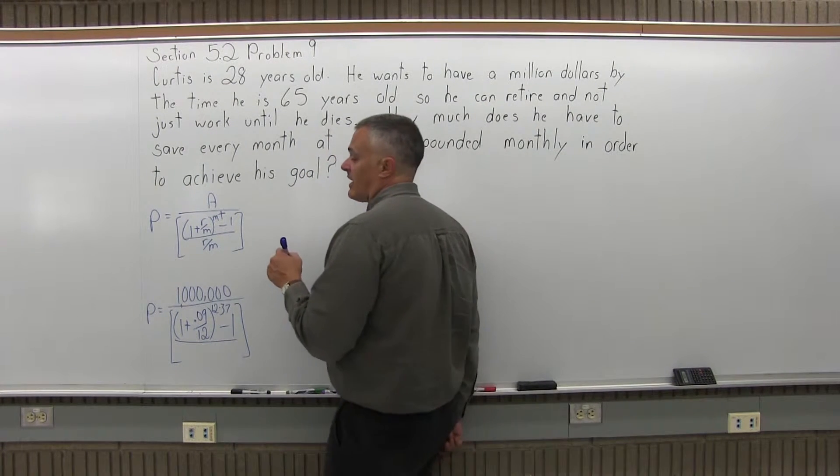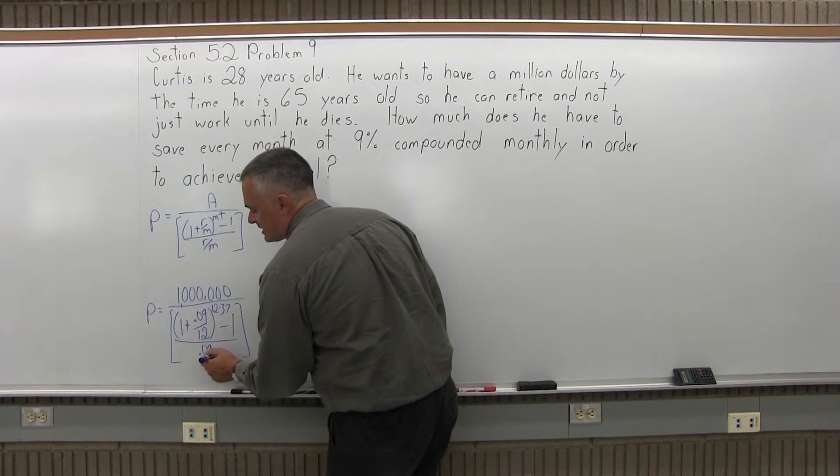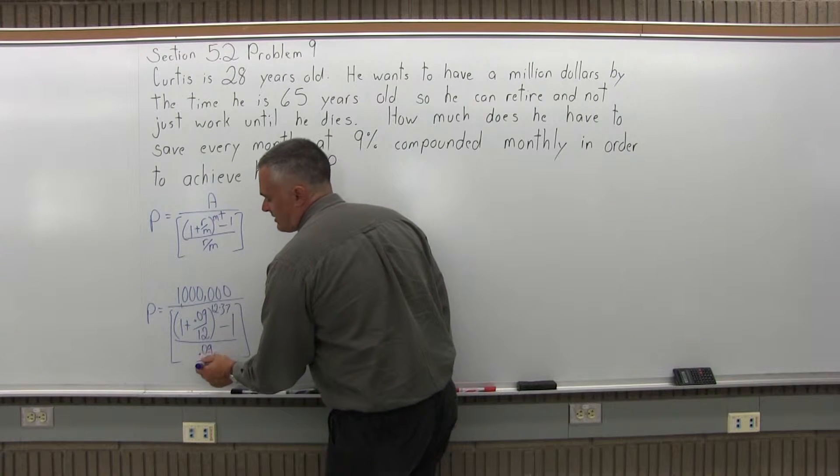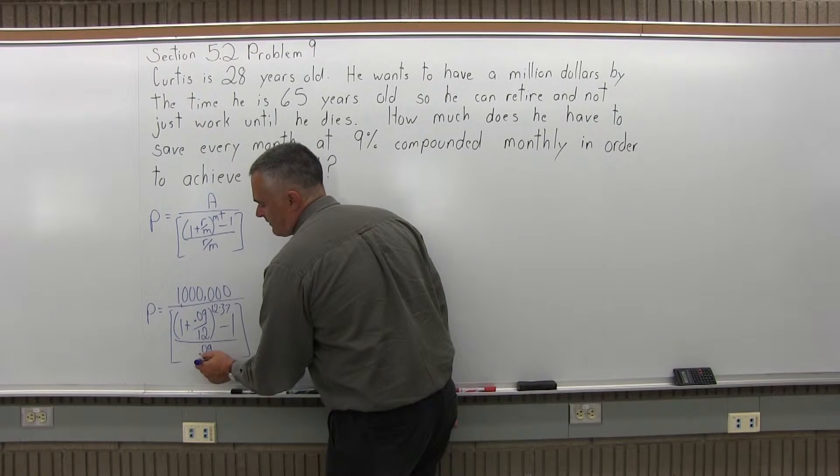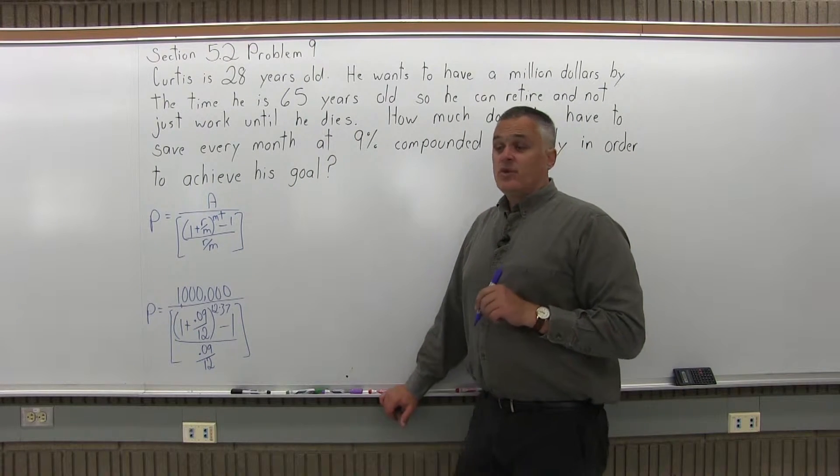And after the parentheses there's a minus 1. In the denominator of the brackets we have r over m again. The r is the rate as a decimal, so this problem is 9% as a decimal as .09. And under the r is an m, m is 12 for this problem because we have monthly compounding. So that fills the formula in.